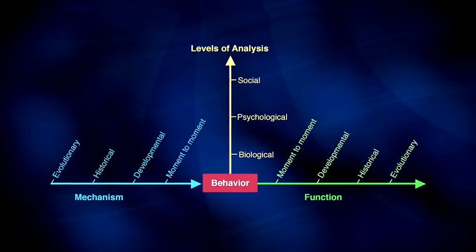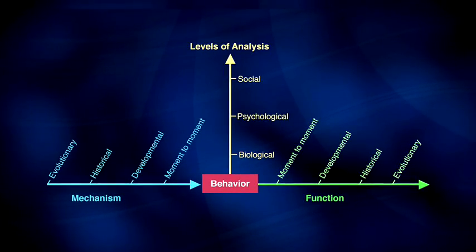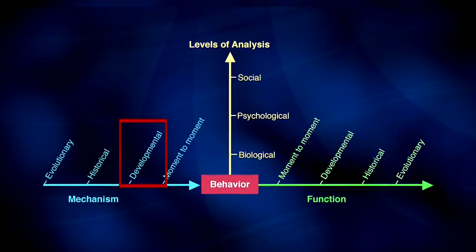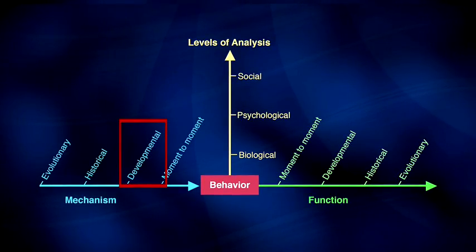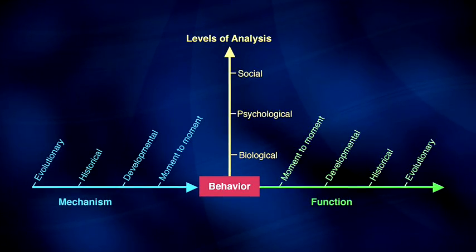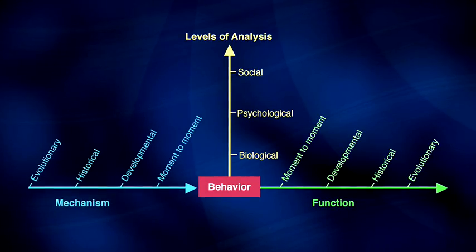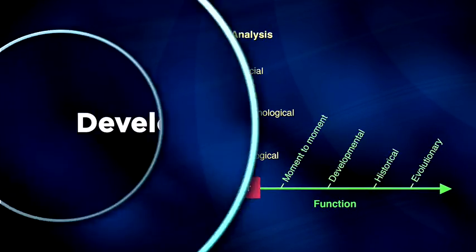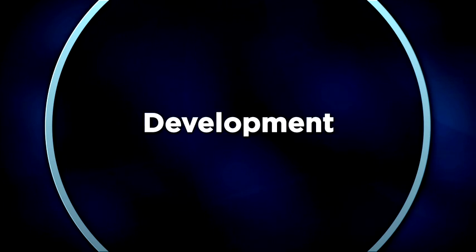But before we jump in, let me briefly set up this section of the course. In the next group of five lectures, we'll be talking about the developmental time frame. Using the 3D framework, you'll see how language and the mind emerge from an interaction of developmental and evolutionary mechanisms. By the end of this section, you'll be ready for yet another set of lectures in which we will discuss how all this comes together in the brain to help us understand and use language from one moment to the next.